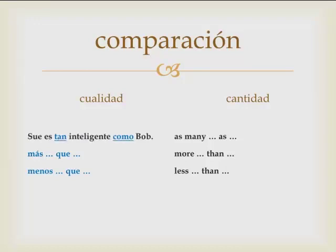Let's look at some examples. Su es tan inteligente como Bob — Su is as intelligent as Bob. They're equal, using as...as. Su es más inteligente que Bob — Su is more intelligent than Bob. Su es menos inteligente que Bob — Su is less intelligent than Bob. In each of these three examples we're comparing qualities of two people, either equal or unequal. Tan como, más que, y menos que.